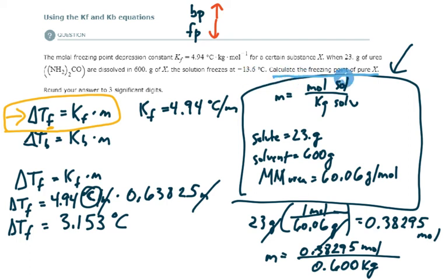So to figure out the freezing point of pure X, the non-depressed freezing point, I just take where it's frozen now, figure out what the depression is, and take that away.